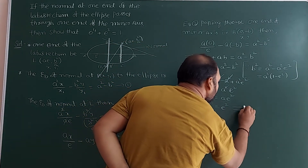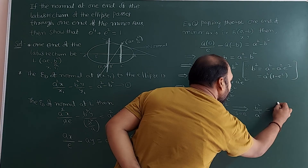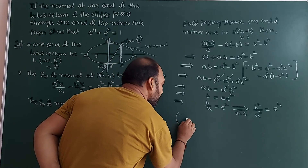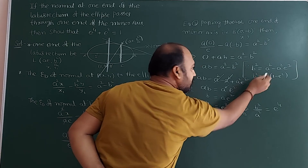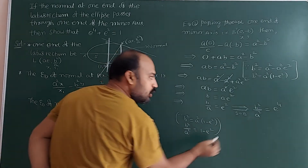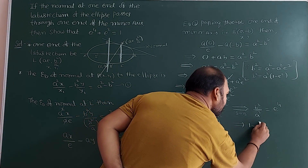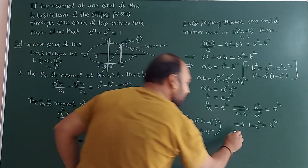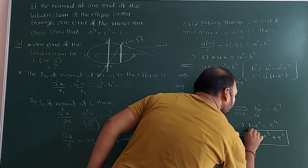Squaring both sides gives b²/a² = e⁴. Now, from the standard formula b² = a²(1 − e²), dividing by a² gives b²/a² = 1 − e². So replacing b²/a² with 1 − e², this result becomes: 1 − e² = e⁴. Moving e² to the right-hand side gives the required answer: e⁴ + e² = 1. Hence proved.